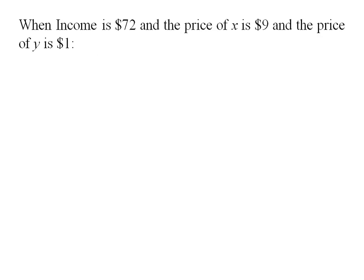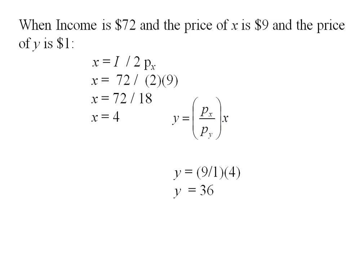So when my income is 72 dollars and x costs 9 dollars per unit and y is a dollar, my demand for x is 4 units. I can plug back in and get that y is 36 units. So my initial bundle has 4 units of x and 36 units of y.